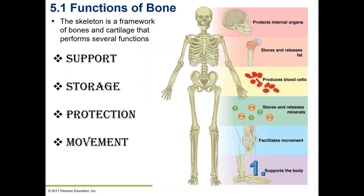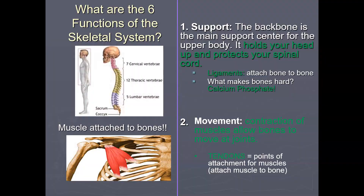The skeleton is a framework of bones and cartilage that performs several functions: support, store, protect, and movement. The first function of bone is support. For example, the backbone is the main support center for the upper body — it holds your head up and protects your spinal cord. Ligaments are structures that attach bone to bone. What makes bones very hard is the mineral calcium phosphate.